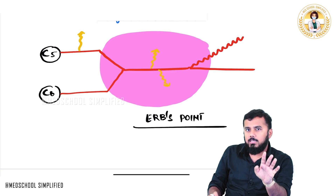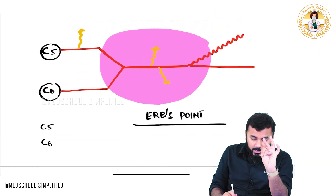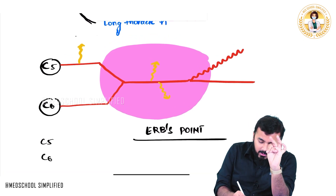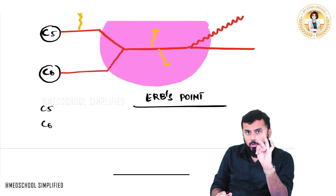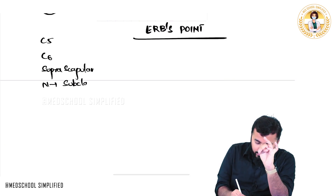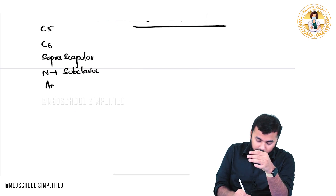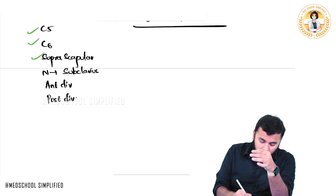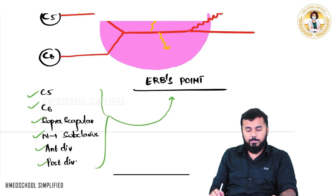How many nerves are involved in Erb's point? C5 and C6 roots — two nerves. The dorsal scapular nerve is not involved here. From the trunk we have the suprascapular nerve and the nerve to subclavius. Then we have anterior and posterior divisions. So overall six nerves are present in Erb's point.